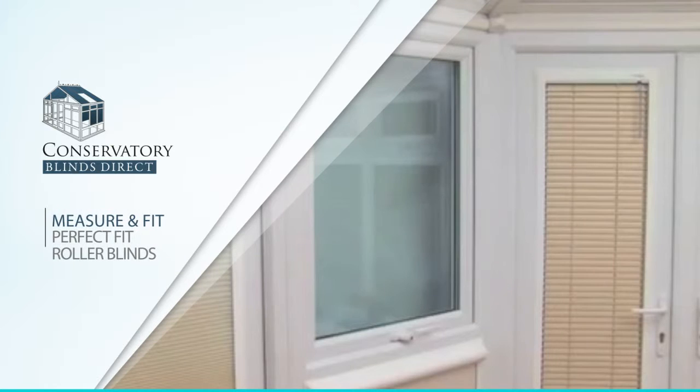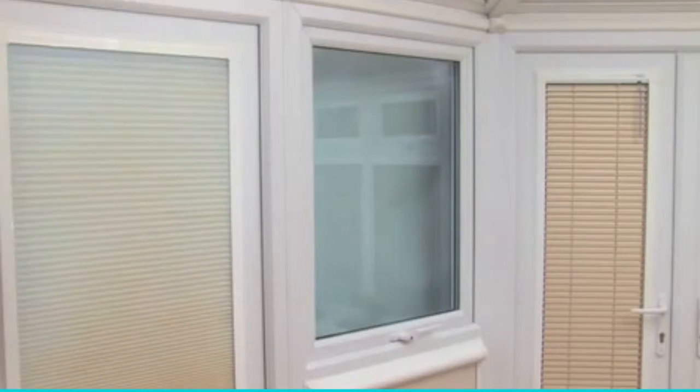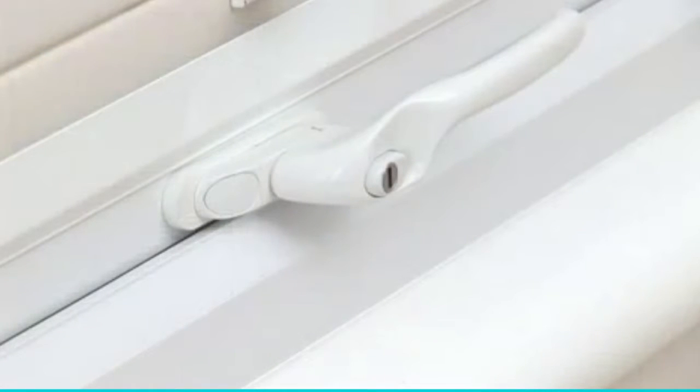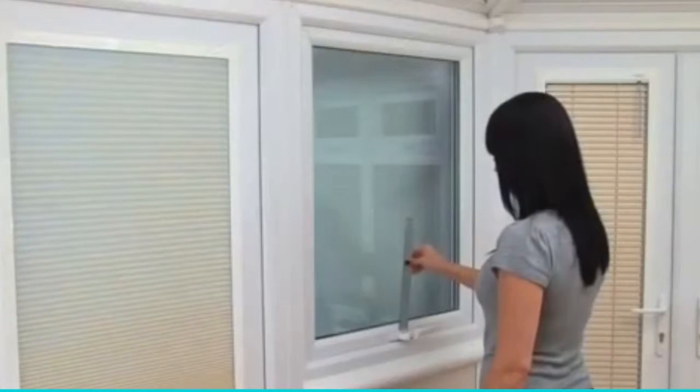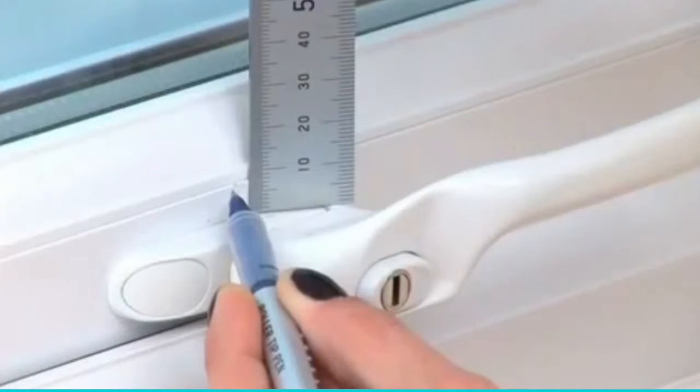Before you begin, please ensure that you have a minimum six millimeter clearance between the edge of the window beading and any possible obstructions, in this case the operating handle, to allow enough room for the perfect fit window blind to be installed.